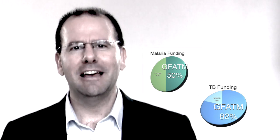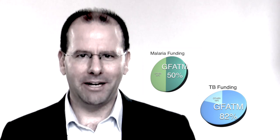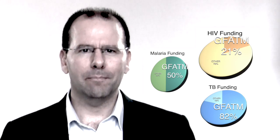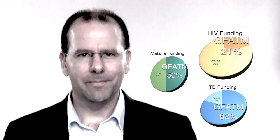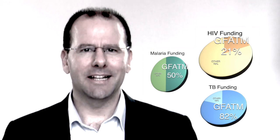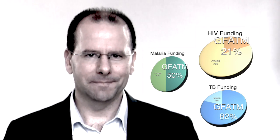So briefly, the Global Fund to Fight AIDS, TB and Malaria was started in 2002. It's currently providing about 82% of international funding for TB, 50% for malaria and 21% for HIV. It also funds health system strengthening.